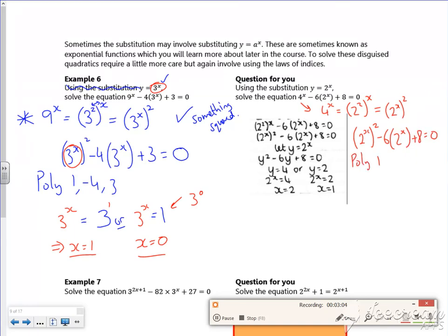So I put it into poly, 1, minus 6 and 8. It gives me answers of 4 and 2.